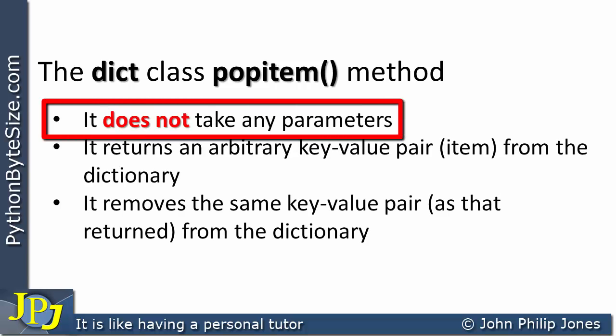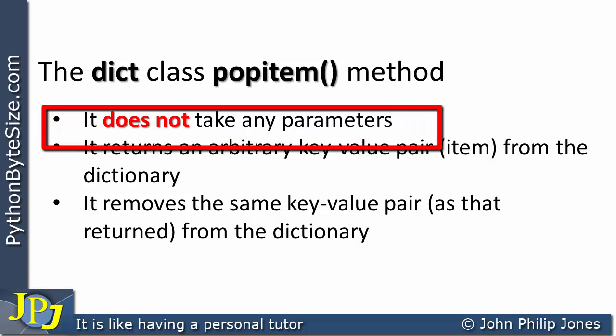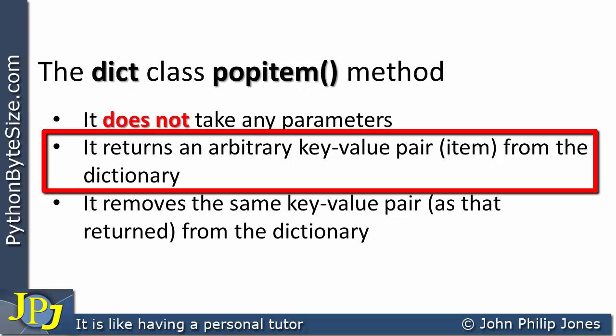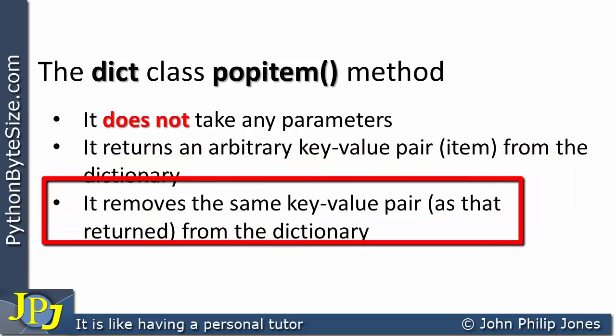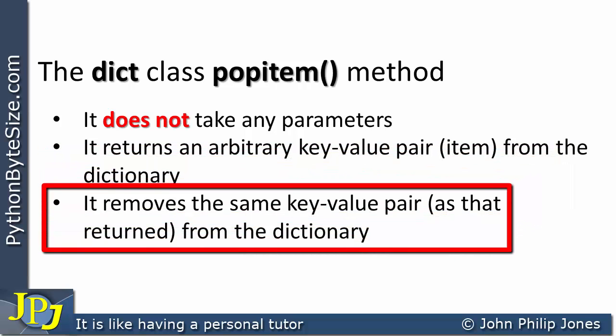It does not take any parameters. In other words, when you send a message to an instance of the Dictionary class, the popItem takes with it no parameters. What it does, it returns an arbitrary key-value pair — in other words, an item — from the Dictionary. It also removes that same key-value pair from the Dictionary as the one that's actually been returned.